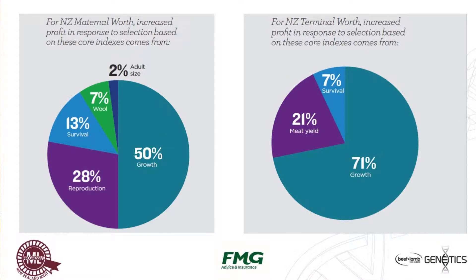On your behalf we've really worked towards having these standard indexes. The standard one for maternal worth: with this index, 50% of the selection pressure — the profit you're going to get — is out of growth. 28% is going to be on the emphasis on reproduction, how many more lambs they'll have. There's 13% emphasis on survival, so that lamb has got to get up and survive but also the mother's got to be good at rearing that lamb. And there is a 7% slice on wool, because it's a cost to our business and we still get some revenue out of that.